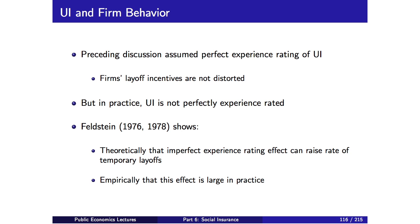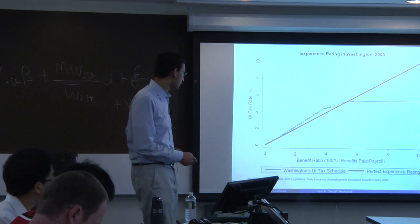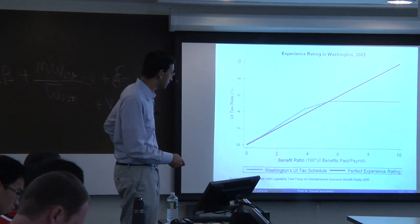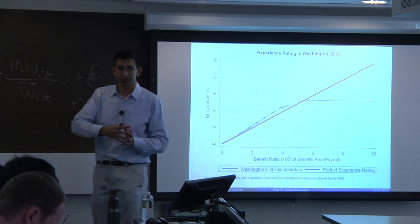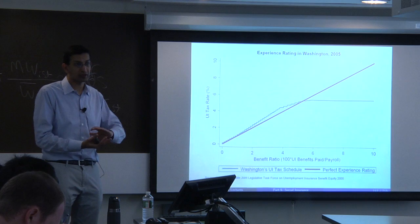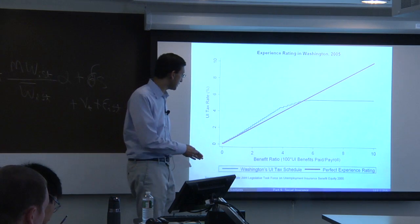In practice, UI is not perfectly experience rated in the U.S. or other countries. In a pair of influential papers in the late 1970s, Marty Feldstein showed first, theoretically, that imperfect experience rating can raise the rate of temporary layoffs—firms have an incentive to lay off workers and hire them back, taking advantage of a paid vacation at the government's expense—and second, empirically, that this effect is actually fairly important. The benefit ratio for a firm is the amount of UI benefits paid due to a firm's layoffs divided by that firm's payroll. For the system to be perfectly experience rated and not distort the firm's incentives, the tax rate imposed on the firm would need to be perfectly linear in that ratio.